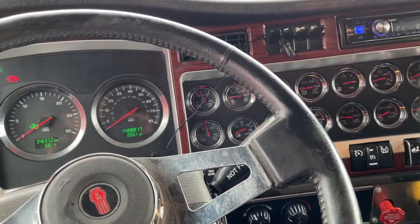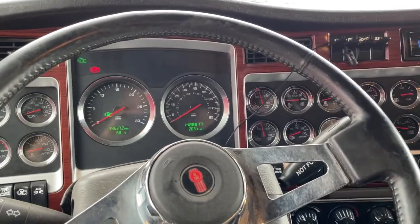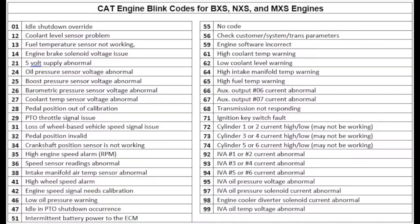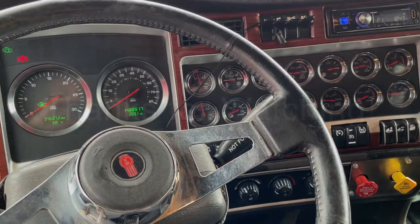And it's as simple as that. Once you've counted the code, you can then go look at this list of codes and identify what your problem is. Some of these are more serious than others — you can look that information up. I had code 55, which is "no code," which makes sense because I don't have an engine light right now. And it's just that simple — that's how you pull CAT engine codes.